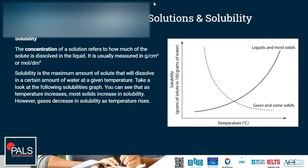The concentration of a solution refers to how much solute is dissolved in the liquid. It is usually measured in g per cm³ or mol per dm³, where mol refers to the amount of substance or particles. Solubility is the maximum amount of solute that will dissolve in a certain amount of water at a given temperature. Looking at the graph on the right, as temperature increases, most solid solutes increase in solubility.